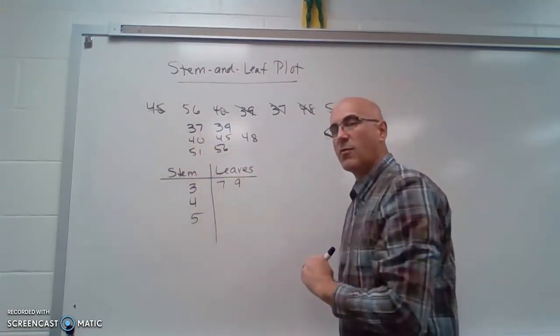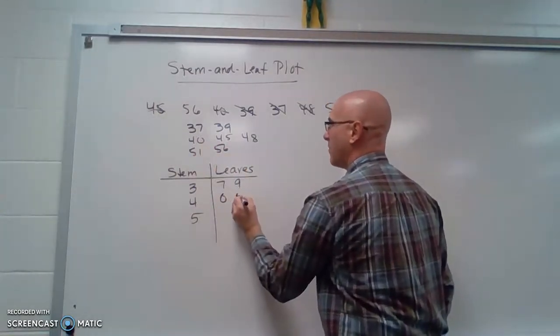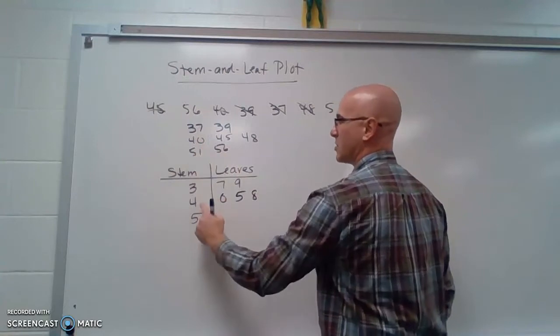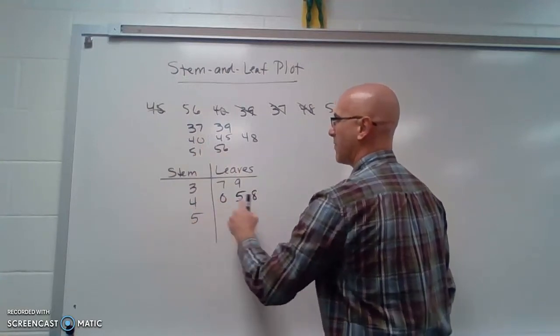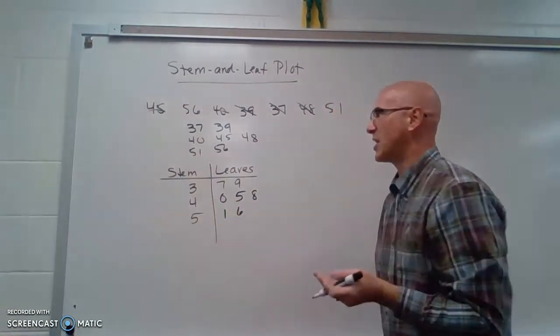We're going to do the same thing for the 4s, the 40s. We've got a 0, a 5, and an 8. This represents 40, 45, and 48. And then 50s we've got a 1 and a 6.